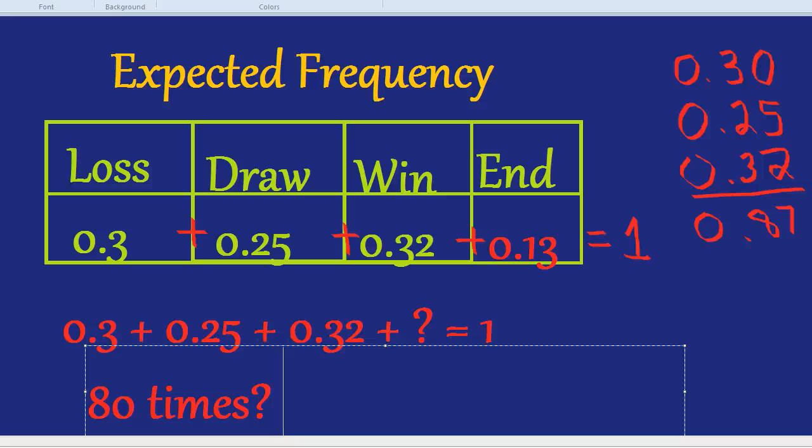For example, the chance of getting a heads on a coin is 50-50. But if you toss the coin 10 times, it's quite likely you won't just get 5 heads. You might get 6 or 7 or 3 or 4. So this is all about expected frequency.